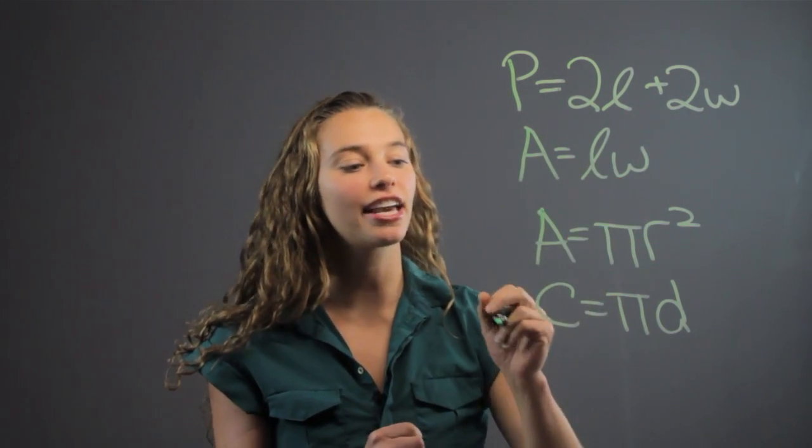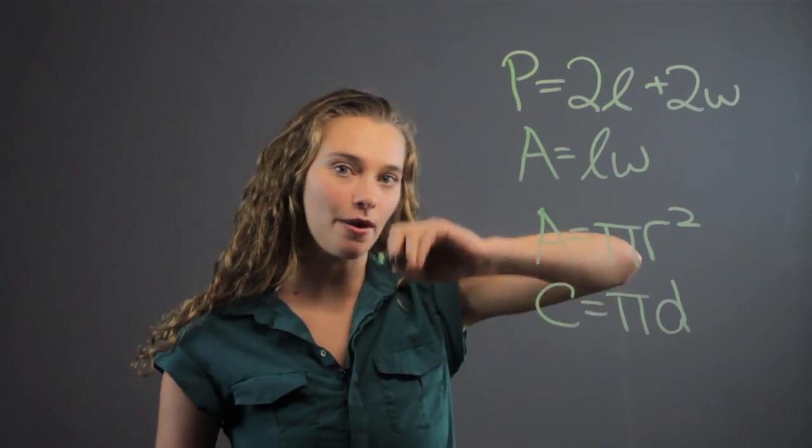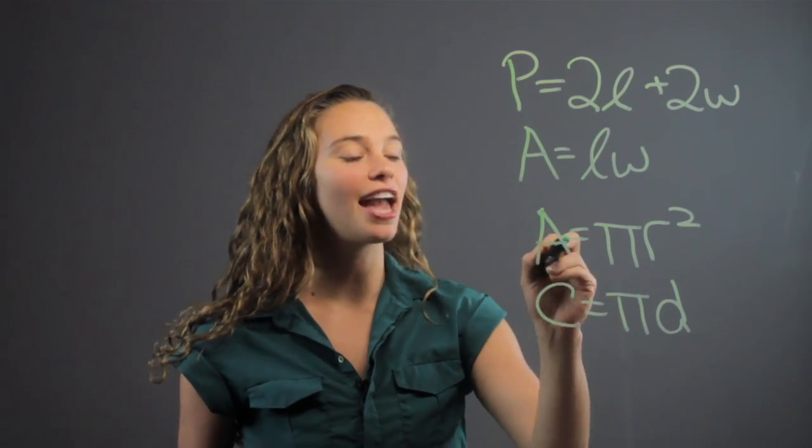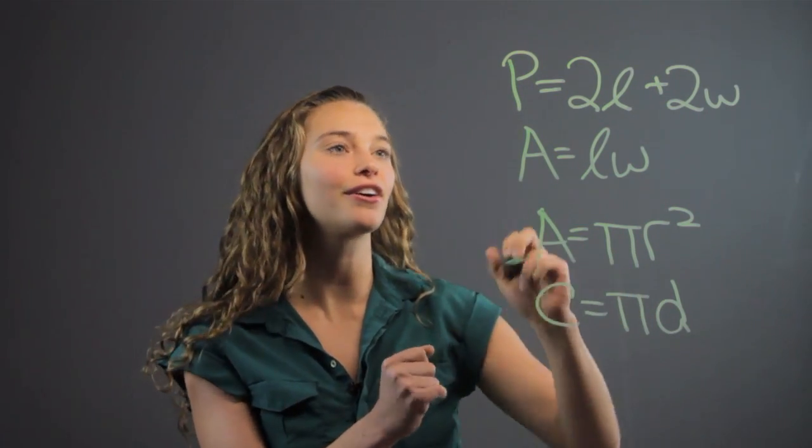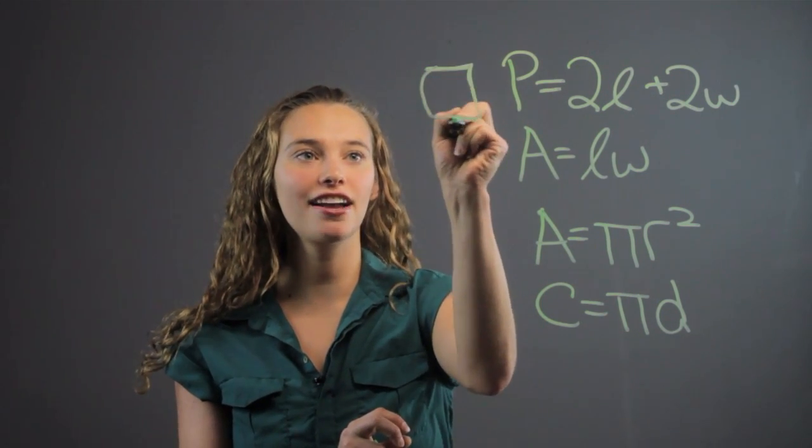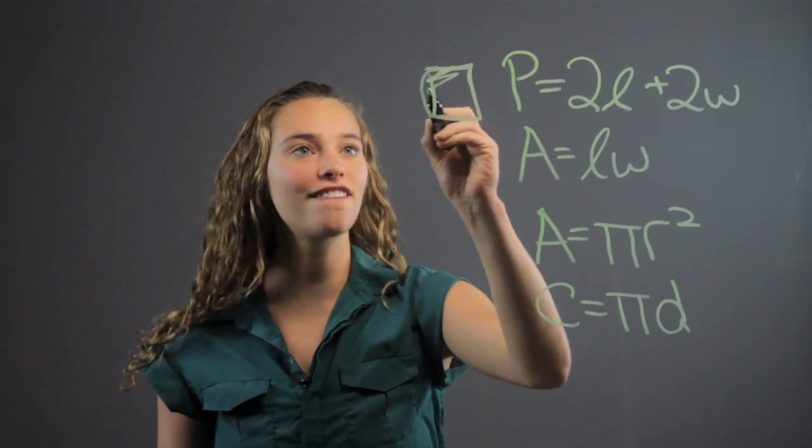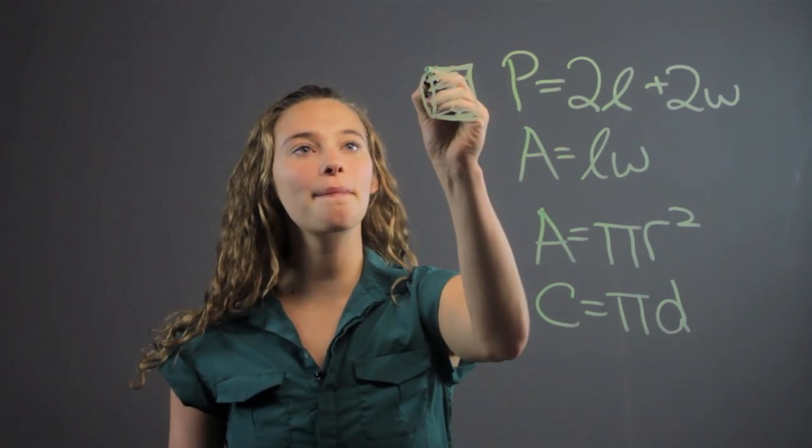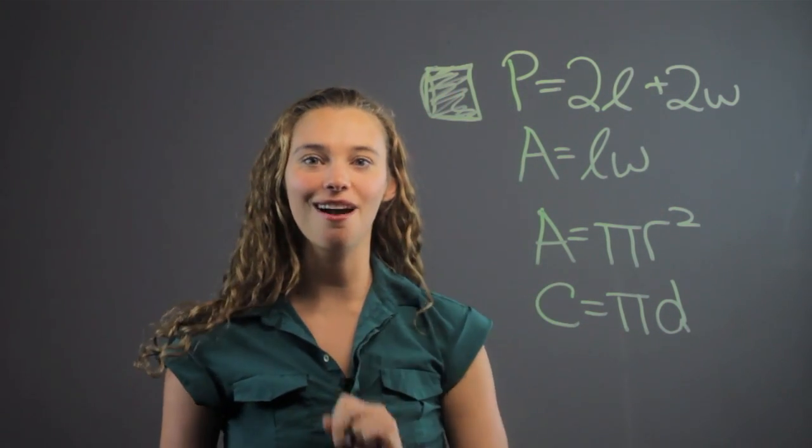As I look at this equation they can see, oh okay, well this is going around the circle whereas the area is filling in the whole circle. The perimeter is like the fencing of the rectangle where the area is filling in the whole rectangle. So these are some important equations for them to look at.